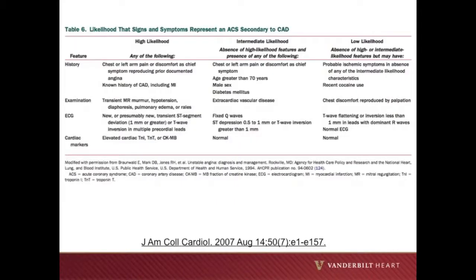So now let's put it all together. The following table is from the ACC/AHA guidelines on the management of unstable angina or non-ST elevation myocardial infarction. Based upon the categories of information we have discussed, you should be able to classify your patient as either having a high, intermediate, or low likelihood of having ACS due to coronary artery disease, based upon their signs, symptoms, EKG, and cardiac biomarker findings. Take a moment to review, and then we will practice with the case.